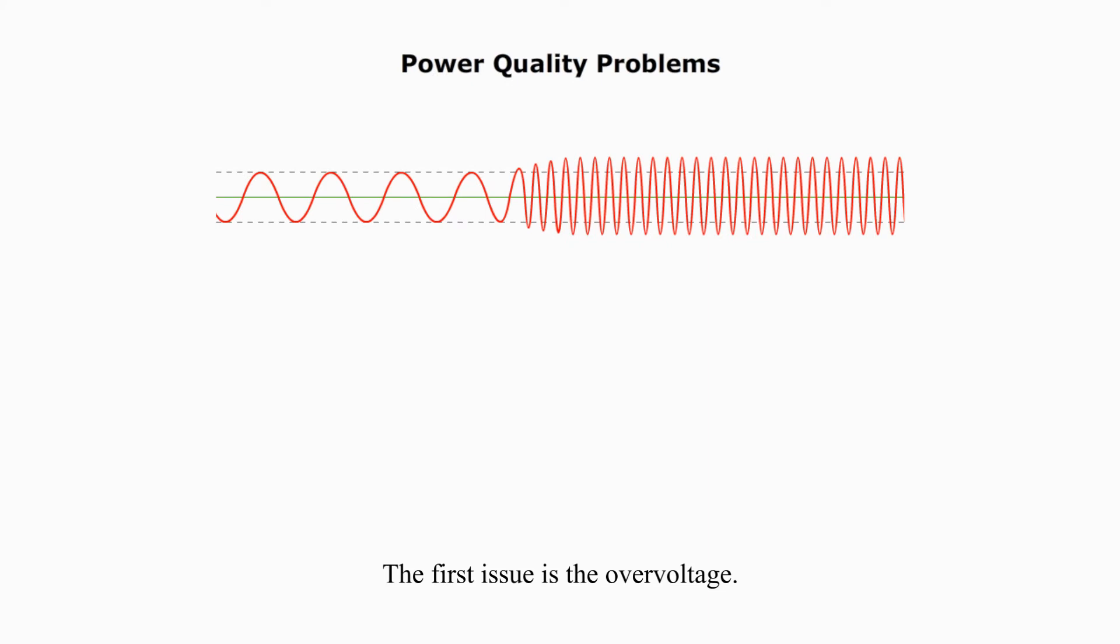The first issue is overvoltage. Overvoltage refers to the power supply above the normal voltage range. Overvoltage can last for minutes to several days. It includes several different conditions such as surges, spikes, and transients.